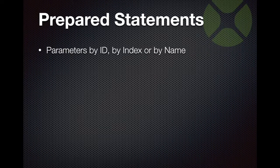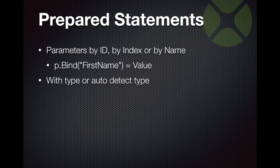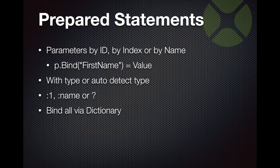We support prepared statements to avoid SQL injections. We can pass parameters by ID, index, or by name. For example, here we pass the first parameter by name. You can omit the type and let the plugin automatically detect it. We support using double colon with an ID number, double colon with a name, and the question mark like in Xojo's database classes. You can also pass all parameters together as a dictionary object.